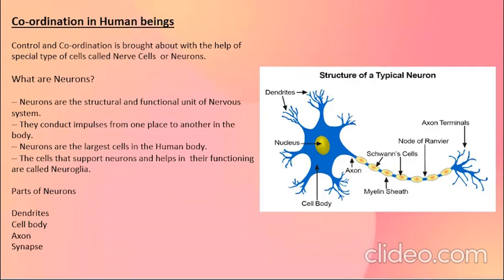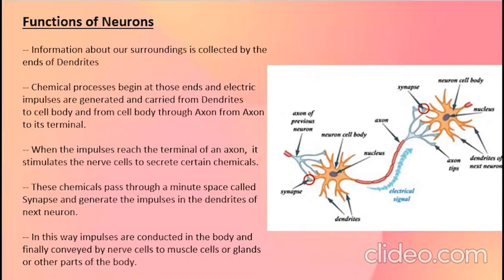Let us revise the functions of a neuron. Information about our surroundings is collected by the ends of the dendrites. Chemical processes begin at those ends and electrical impulses are generated and carried from the dendrites to the cell body, then through the axon to its terminal. When impulses reach the axon terminal, the nerve cells secrete certain chemicals that pass through the synapse and generate impulses in the dendrites of the next neuron. In this way impulses are conducted and finally conveyed to muscle cells or glands.